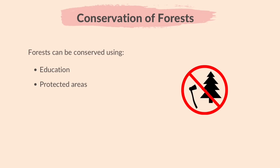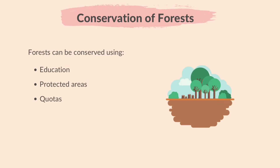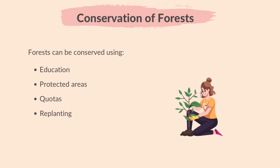Protected areas — creating special zones where cutting down trees is limited to keep forests safe. Quotas — deciding on how many trees can be cut so we don't take too many. Replanting — planting new trees to replace the ones we use so the forest stays healthy.